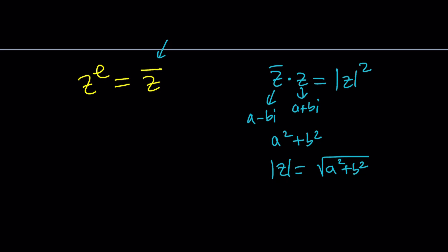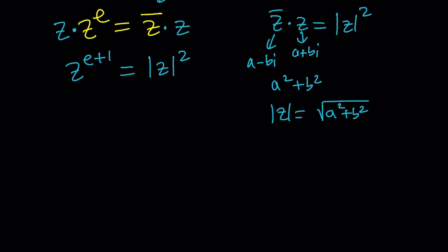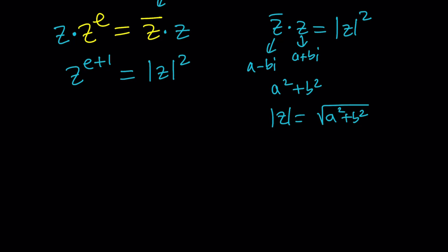Let's go ahead and multiply by Z. On the left hand side that's going to give us Z to the power e plus 1 equals absolute value of Z squared. Now at this point, there's something that will help us a great deal if we consider absolute values.